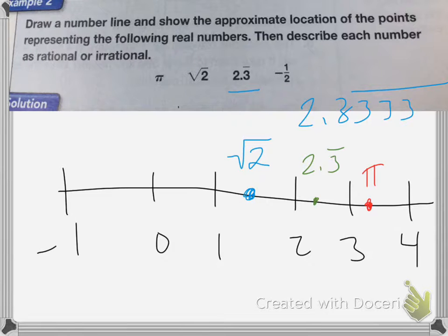And the last one is negative 1 half and that one has a definite place, it's right in between negative 1 and 0, it's negative 1 half.